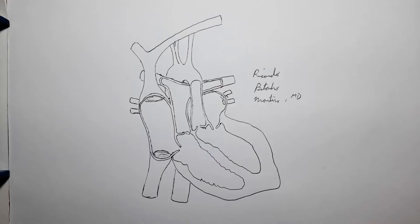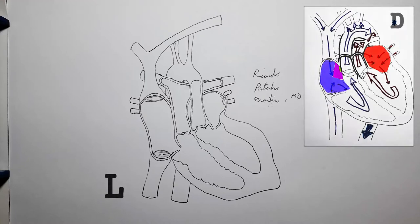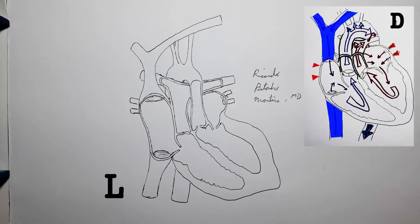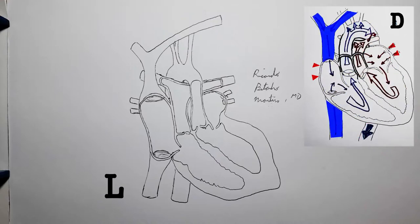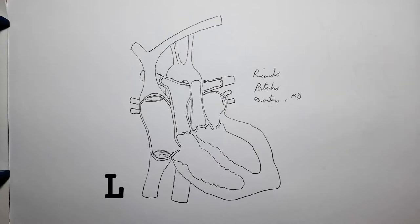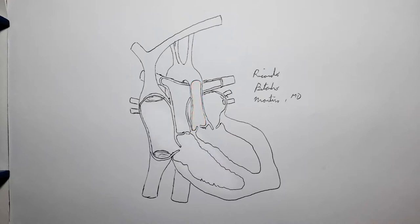The consequences are going to be pretty different from D-TGA. In D-TGA we had the formation of two closed loop systems incompatible with life unless there was some communication between the right and left hearts, such as atrial or ventricular septal defects or a patent ductus arteriosus. In LTGA we don't have that — blood coming into the left heart leaves through the aorta, and blood coming into the right heart leaves toward the lungs through the pulmonary trunk.